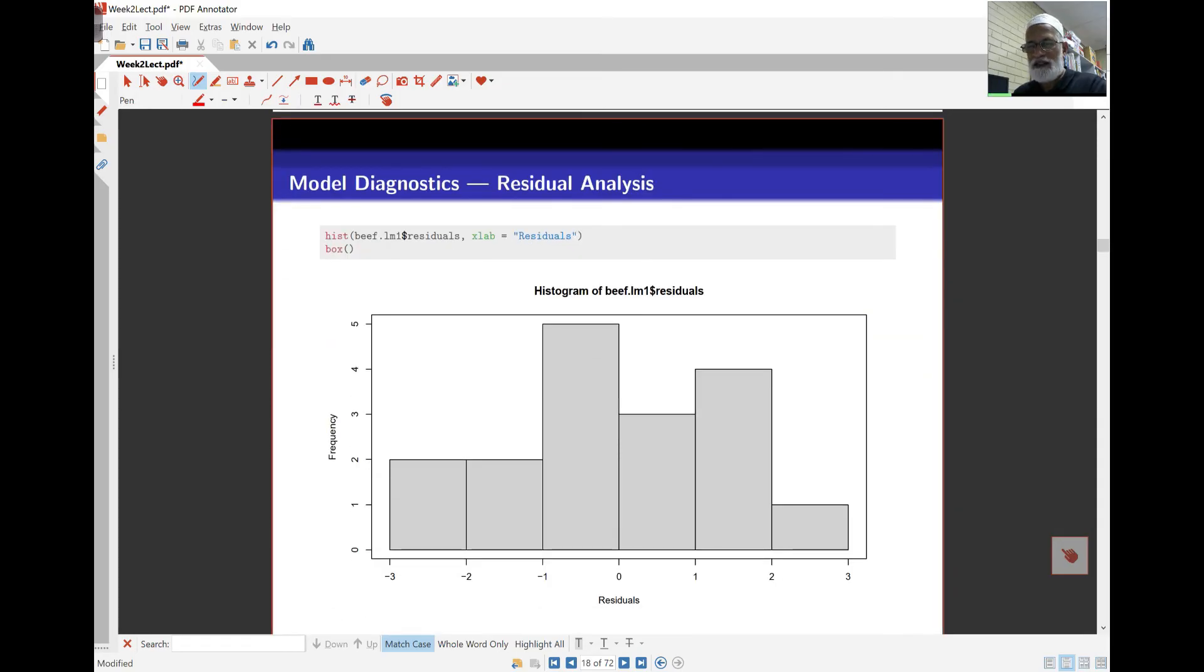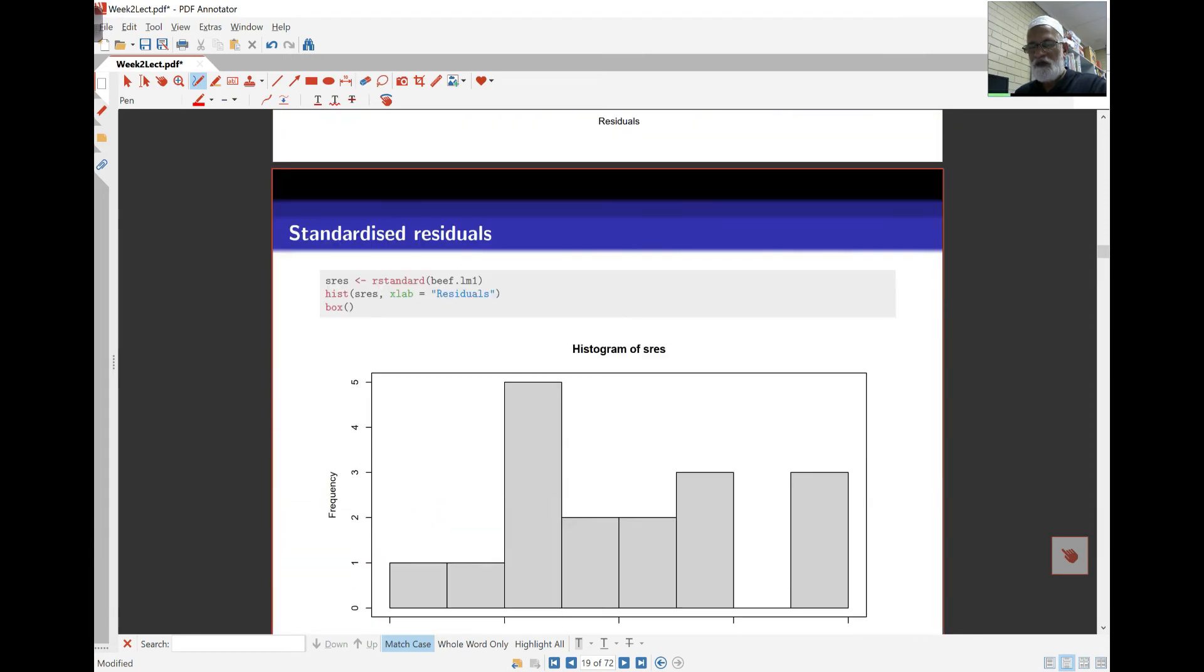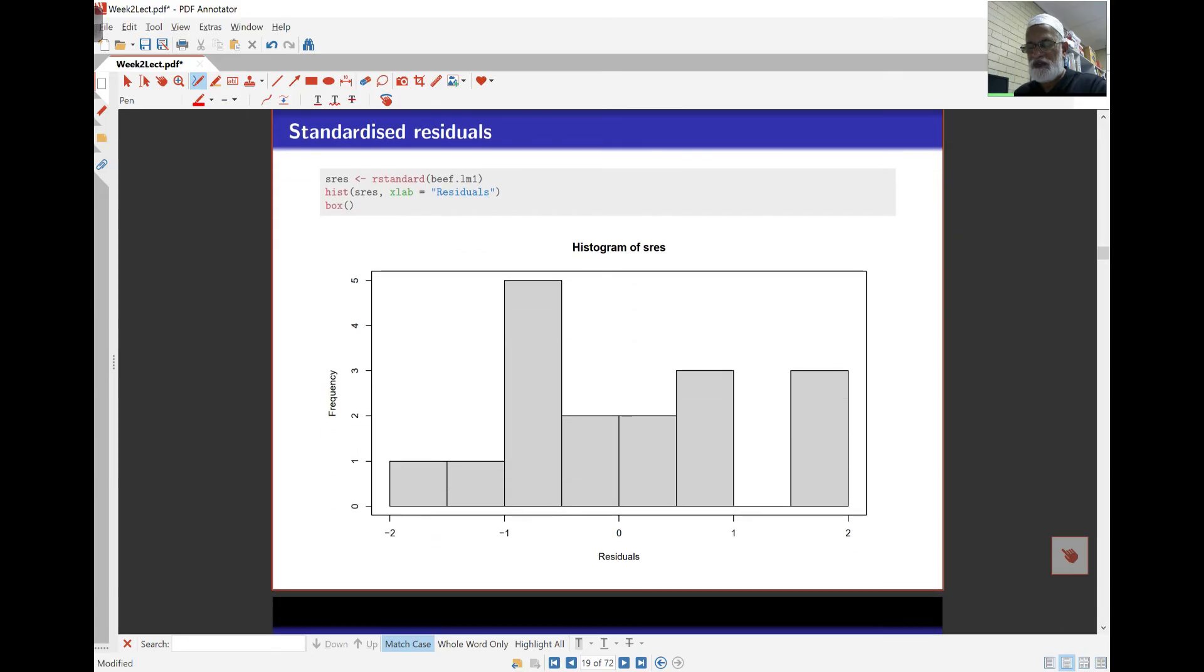Histogram is also important to look at. Here's a histogram of residuals. And you find that this is the residuals as they are. So they all lie between negative 3 and 3, which isn't so bad. I've also plotted here the standardized residuals. And they all lie between negative 2 and 2. Now, the previous one might have looked a bit more normal than this one here.